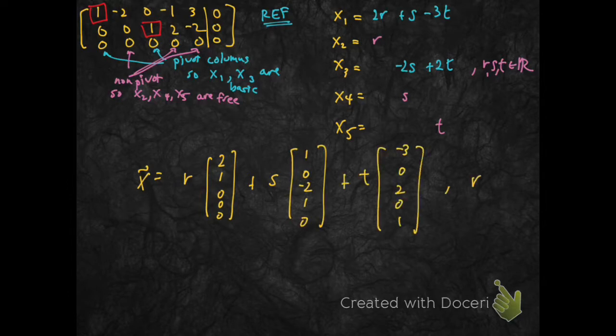And so then I can pull off the free parameters and the vectors they multiply, and write the parametric vector form, x is r times [2, 1, 0, 0, 0], plus s times [1, 0, minus 2, 1, 0], plus t times [minus 3, 0, 2, 0, 1].